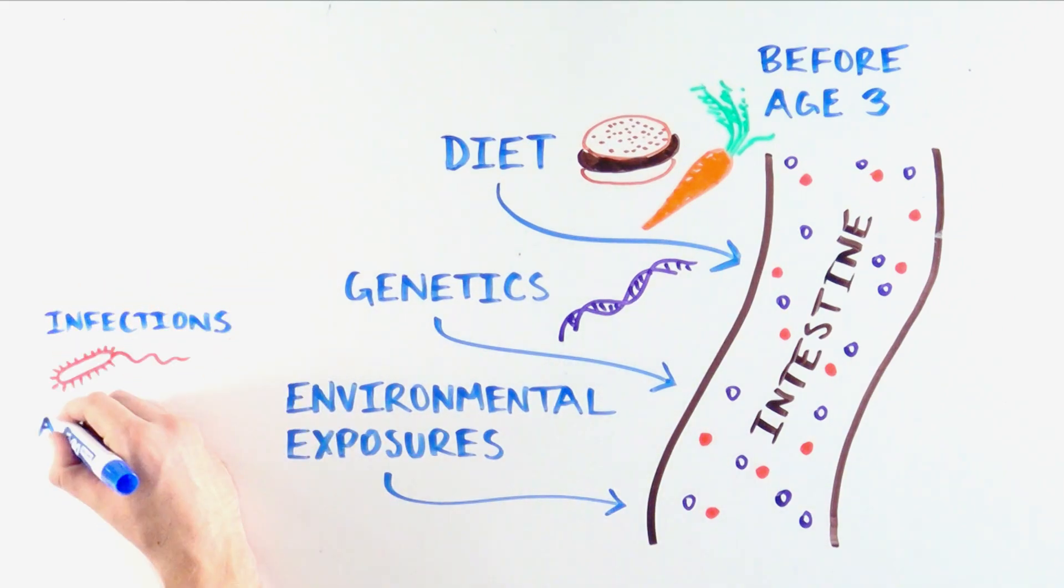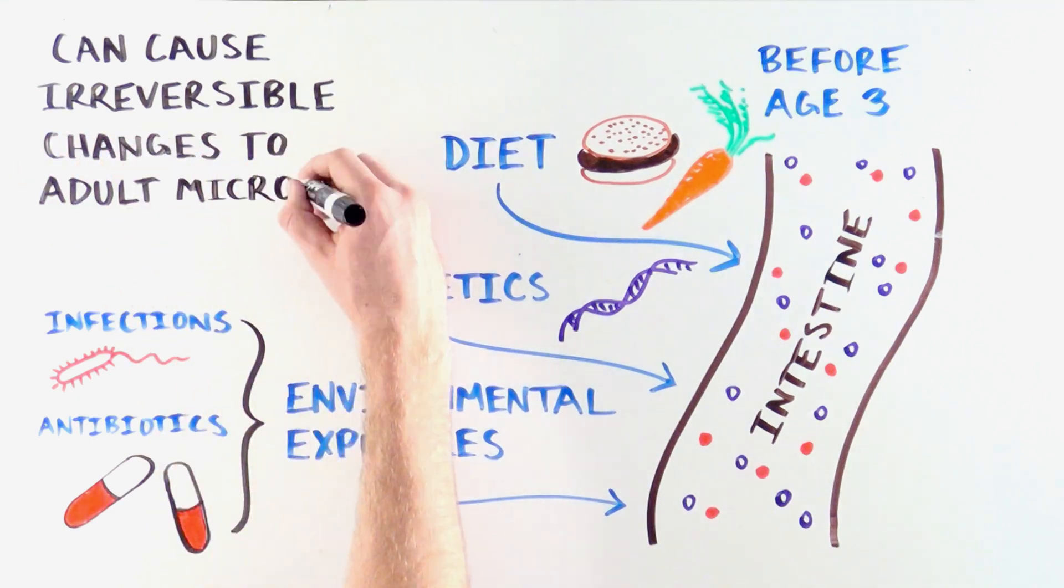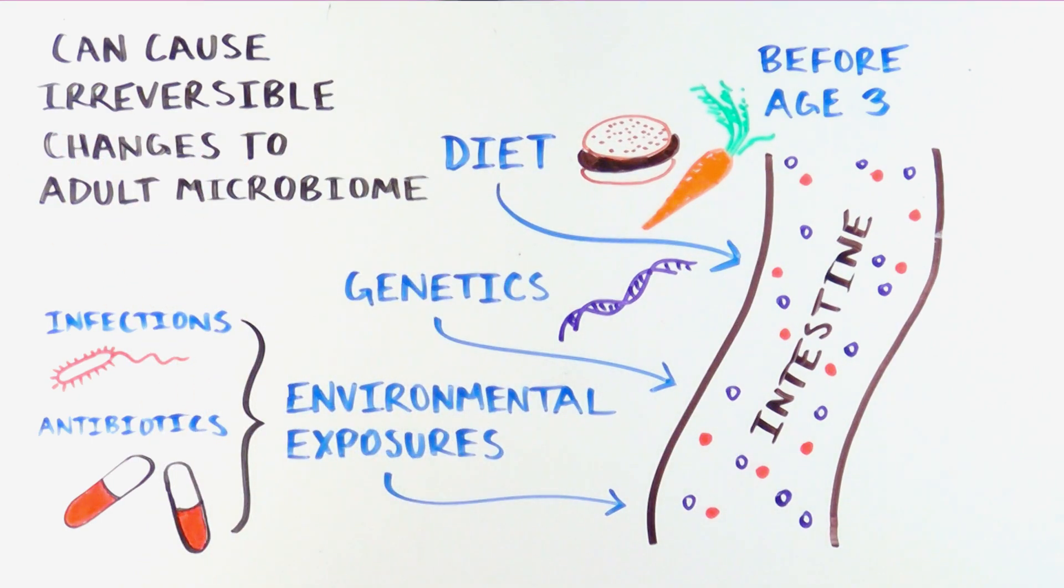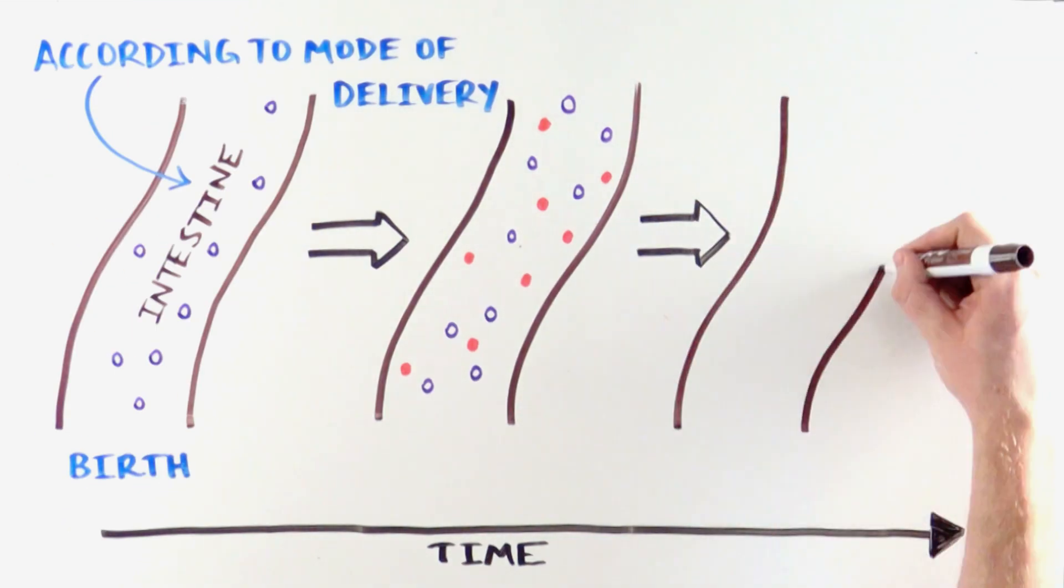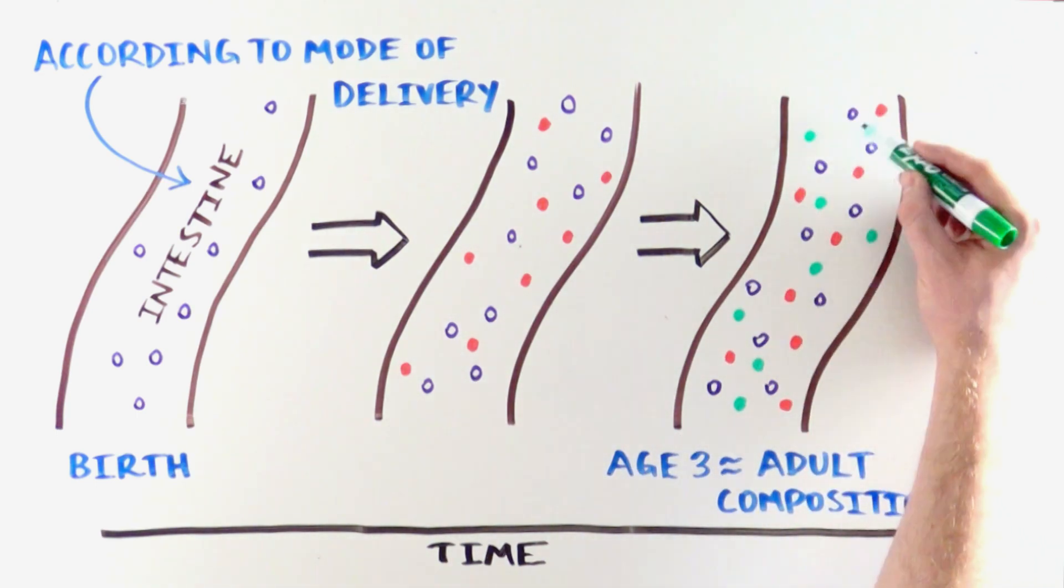Infections and the use of antibiotics can cause significant and sometimes irreversible effects on the future adult gut composition. From the age of three, the gut microbiome is becoming closer to the adult final composition, becomes mature, highly diverse, and relatively stable.